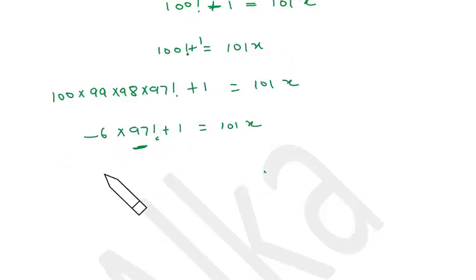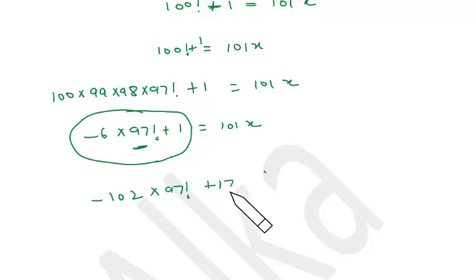Now, I only want 97 factorial, so I have to eliminate this 6. So what I can do is, I can try to find out a number which is 1 plus or 1 minus from 101. So that is 102, which can be taken because 102 is a multiple of 6. Basically, 17 into 6 is 102. So if this entire number is a multiple of 101, that means if I multiply this number by 17, it will still be a multiple of 101. Definitely the variable will be changed, but that doesn't matter. We just have to find the remainder. So on the left-hand side, I multiply by 17. So it is 17 into 6, which is minus 102 into 97 factorial plus 17. Still, it is a multiple of 101.